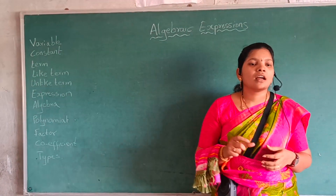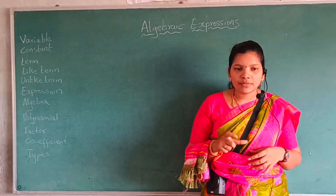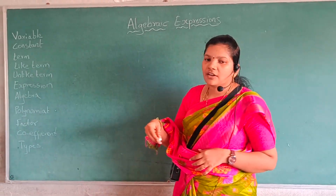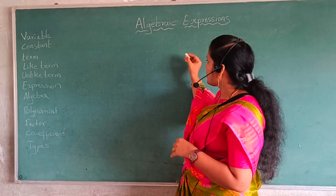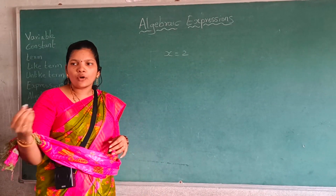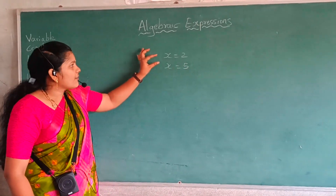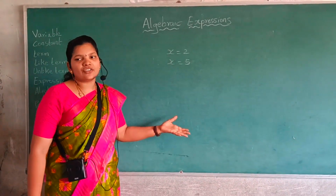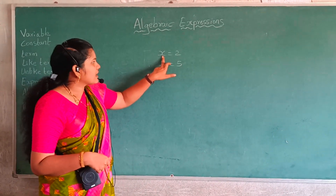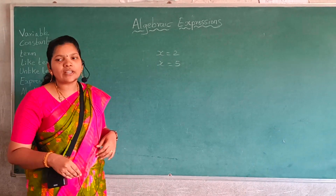First of all, we have to learn what is a variable. A symbol which is varying is called a variable. Varying means changing. Suppose I say X is equal to 2 and some of you say X is equal to 5 — the value of X is changing depending on what we take. Here X is equal to 2 and X is equal to 5, so the X value is changing.